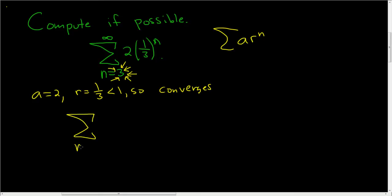Let's take the sum as n goes from 3 to infinity of 2 times 1/3 to the n. Since we know it converges, all you do is take the 3 and put it right there, and that goes in the numerator.